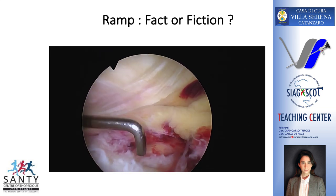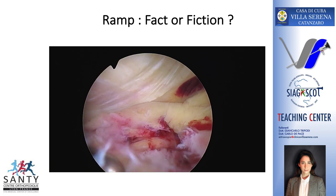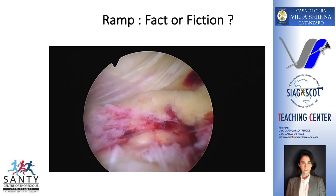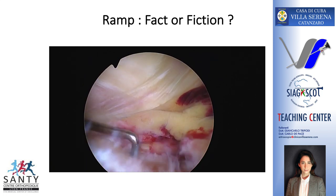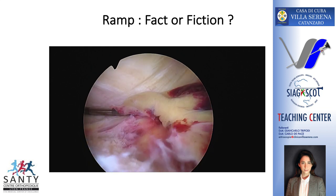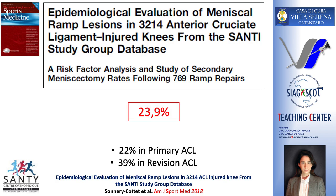And with internal rotation of the tibia, the plateau is exposed. So, the big question: do RAMP lesions exist? We found in this big series of more than 3,000 ACL reconstructions an incidence of almost 24% of RAMP lesions, with different incidences in primary and revision ACL reconstruction.